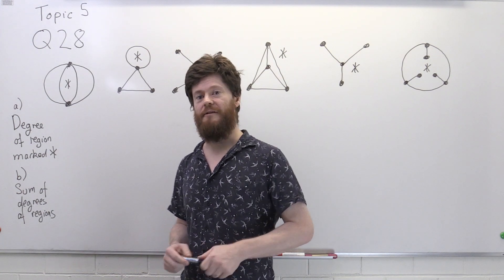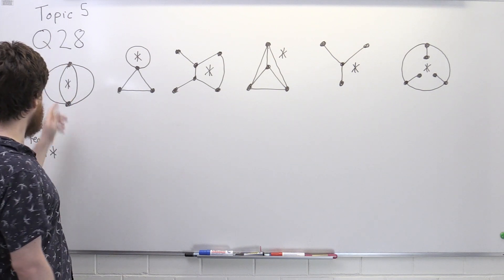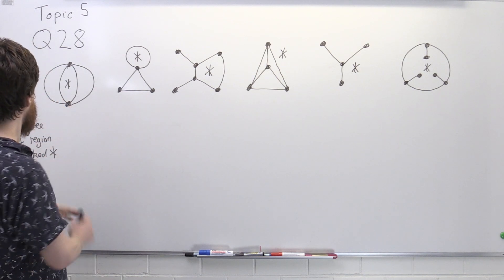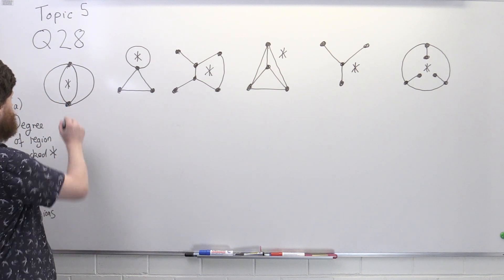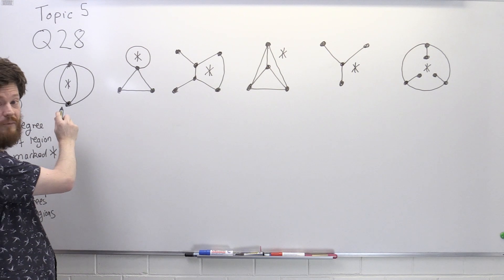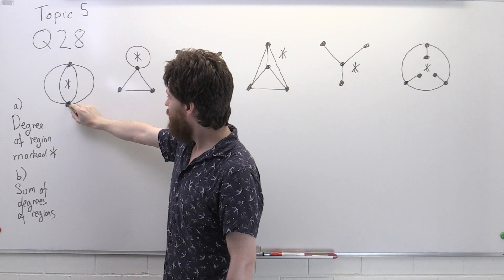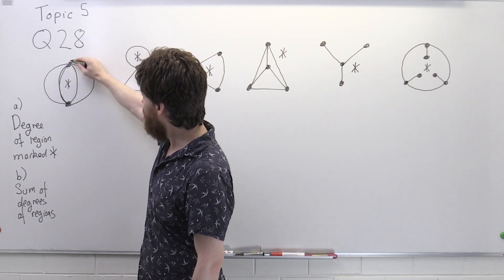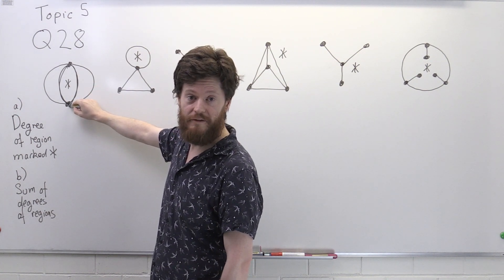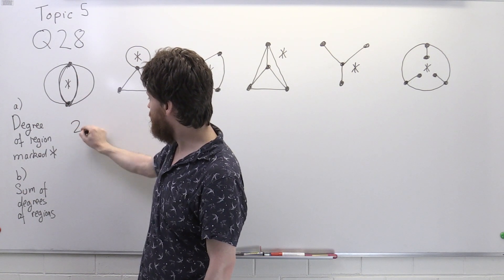Let's think about what that means. In this first graph, this is the region in question and we want to know its degree, so we need to look at the number of edges in the boundary of this region. Starting at any vertex, you go from here all the way up — that's one edge — and then you go all the way back down to the beginning, covering two edges. So the degree of this region is two.